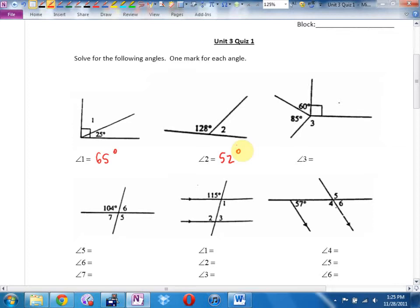Angle 3. Rob, how big? 125. Is he right? People nodding? How come? We're going to eventually call that angles at a point. Add to 360, but I usually just shorten that angles at a point.